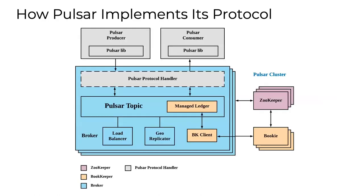We expanded that concept. The brokers shown in blue are our serving layer — the data compute. The yellow boxes are bookies, our infinite stream storage. ZooKeeper is being replaced by an open source project called Oxia, which solves the ZooKeeper scalability problem. What happens is the broker serves the topic, and the protocol handlers are what allow you to speak to different producers and consumers. The brokers implement the protocol handler concept, and you have your Pulsar client libraries for consumers sending data back and forth.